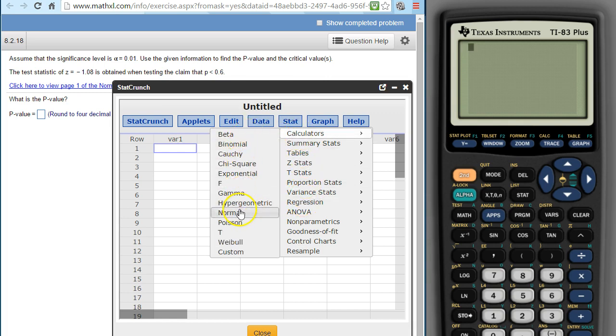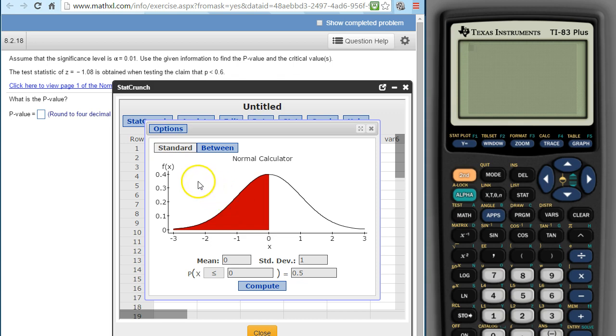Calculators, normal, right? And then this is a standard one because this is a less than for this second claim.